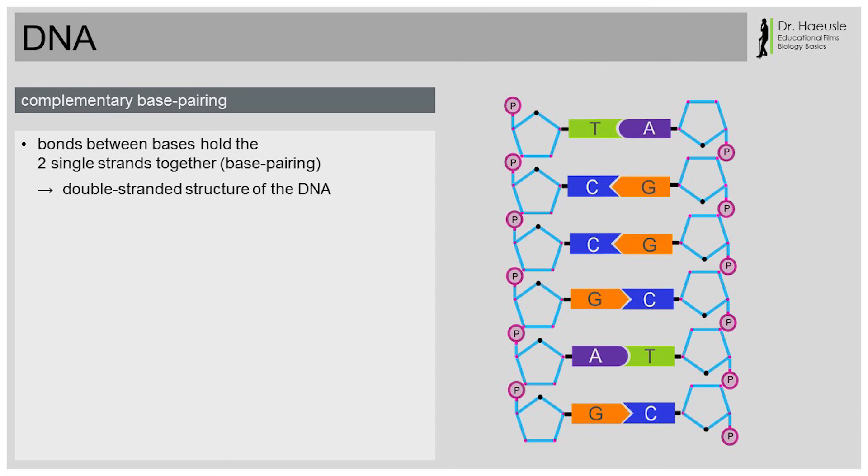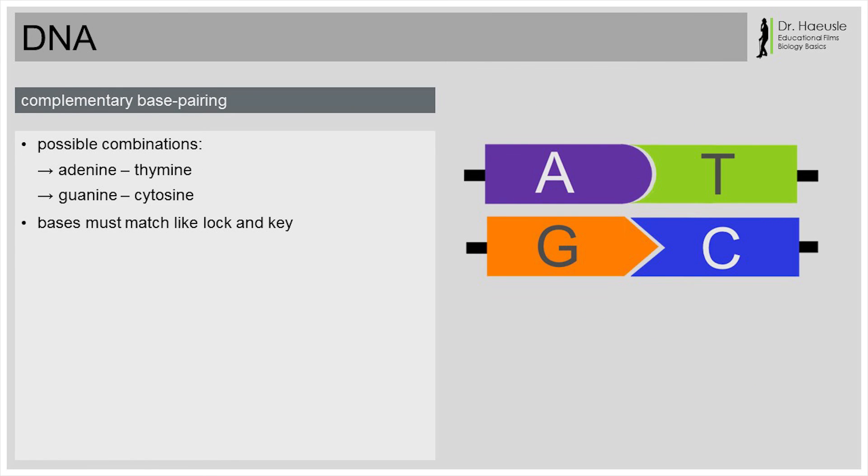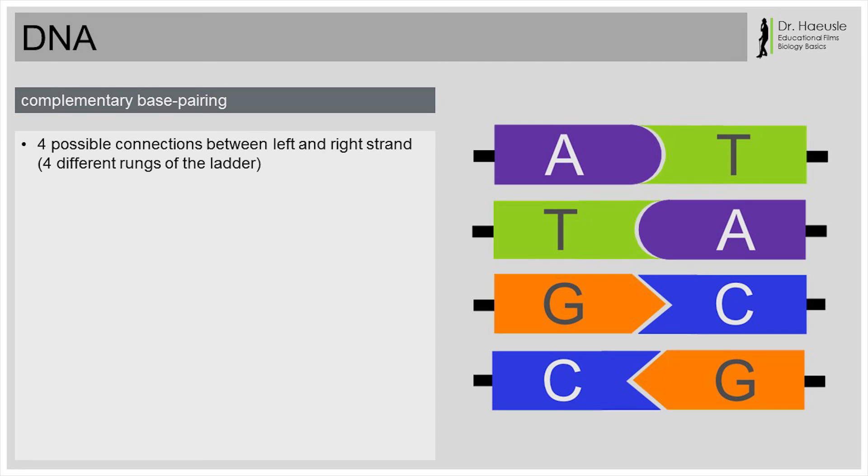Base pairing? What is that? Each base of one strand is connected to one base of the other strand. But, adenine can only be paired with thymine, and cytosine can only be paired with guanine. Therefore, adenine and thymine are called complementary bases, and cytosine and guanine are called complementary bases. That is why it's called complementary base pairing. In DNA, there are only two complementary base pairs. For example, adenine could normally never bond with cytosine. The two bases of a pair must fit like a key into a lock. Each key only matches one lock. Adenine only matches thymine, and cytosine only matches guanine.